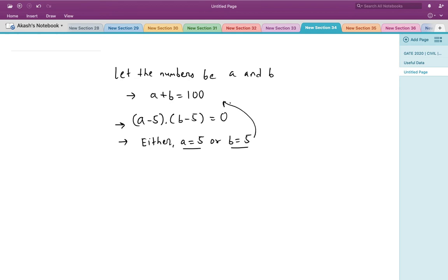That means if I substitute a = 5 in the first condition, then b = 95. Or if I substitute b = 5 in the first condition, then a = 95.